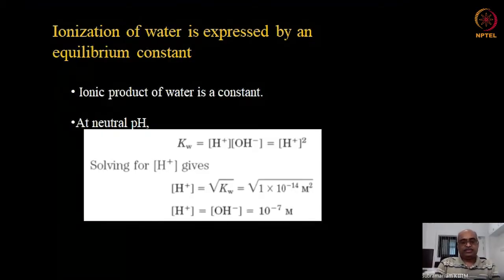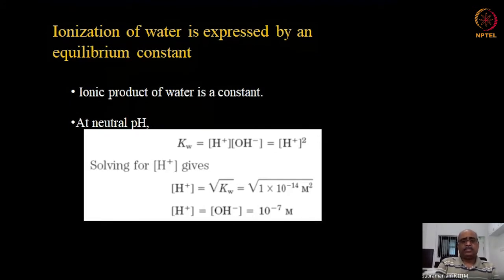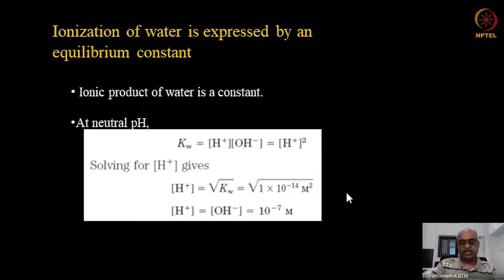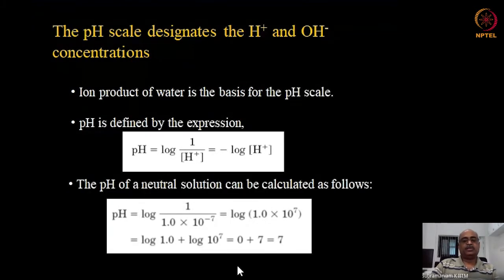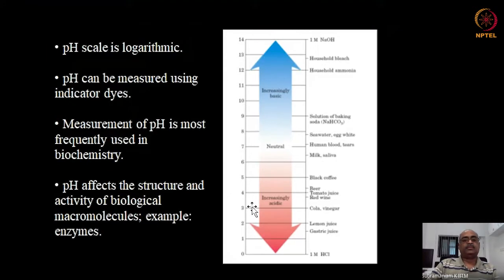Yesterday towards the end of the lecture we were discussing water's ionization, ion product of water, pH, etc. We'll continue on that today — moving to weak acids and their behavior, and as a consequence of that, the buffer system and how buffers are important in biological systems. These are the same slides from yesterday; this cartoon explains the range of pH of common items we encounter every day.